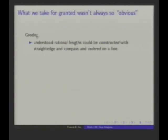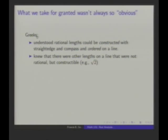If you think back to the Greeks, they understood something about rational lengths. They were interested in constructable lengths — constructable numbers — specifically what you could get by using a straightedge and compass alone. They knew how to construct rational lengths: if you asked for a line of length four-fifths, they could show you how to do that given a line of length one. They also knew there were other lengths on the line that were constructable but not rational.